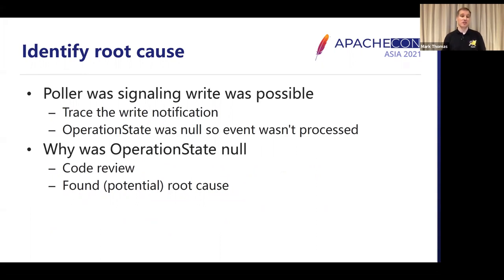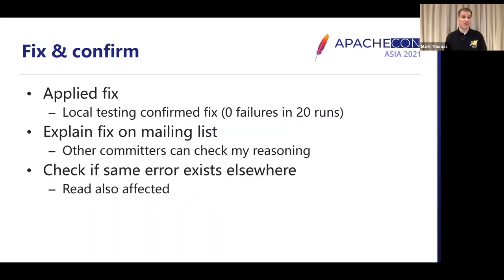The operation state instance, where all the state should have been about the ongoing write, was null. That meant the poller event wasn't processed, so the asynchronous write never completed and eventually timed out. Why was it null? I did a quick code review, found a potential root cause, fixed it. Local testing confirmed it was fixed. I was able to explain my fix on the mailing list so other committers could check my reasoning. I was also able to see that since the read code and write code are practically identical, we'd made exactly the same error in the read code — so I was able to fix both, even though nobody had even reported an issue with the read code.